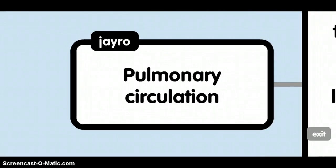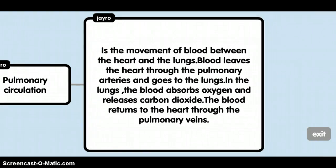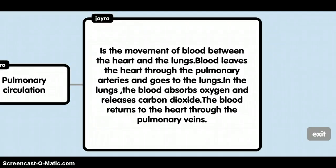Pulmonary circulation is the movement of blood between the heart and the lungs. Blood leaves the heart through the pulmonary arteries and goes through the lungs. In the lungs, the blood absorbs oxygen and releases carbon dioxide. The blood returns to the heart through the pulmonary veins.